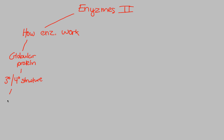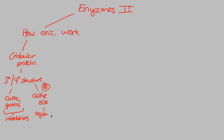Within this structure, we usually see enzymes with specific areas called clefts, grooves, and indentations. All enzymes have these indentations, and their purpose is to form the active site. The active site is a key idea — it is any region of a protein, specifically a globular protein like an enzyme, that interacts with a substrate.